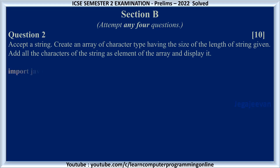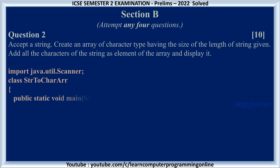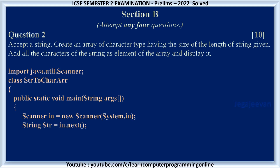To take the input we will import the Scanner class, so java.util.Scanner we are importing. The class name is given and the main method is given: public static void main(String[] args). Now a Scanner object is created — 'in' is the object name equal to new Scanner(System.in). String str is equal to in.next() to take the string input. We need the length of the string, so int l is equal to str.length(). We need the array to be initialized: char ar[] equal to new char[l].